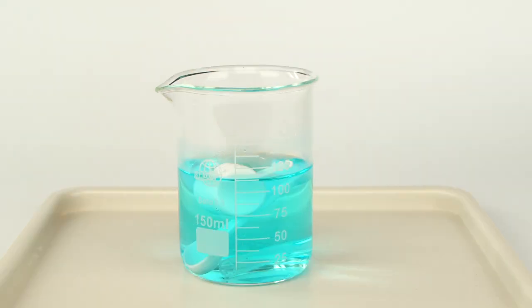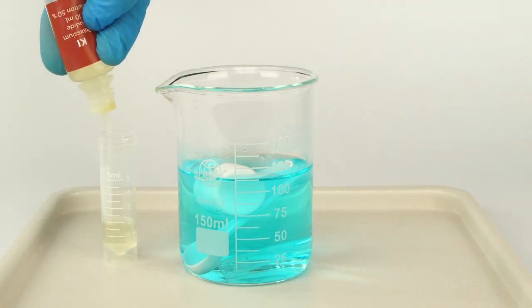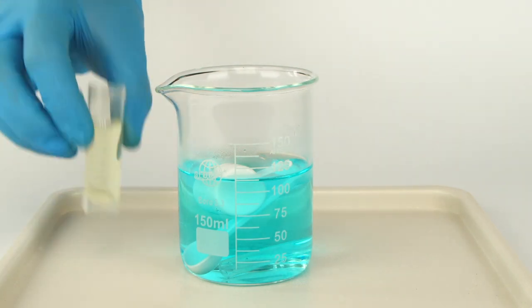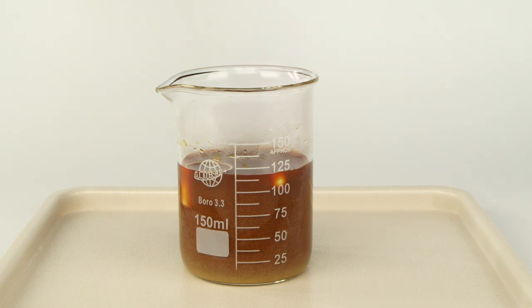Use the graduated cylinder to measure 5 milliliters of potassium iodide solution. Pour the solution into the beaker. Mix 10 seconds using the wooden stick. Cover the beaker with the plastic lid.